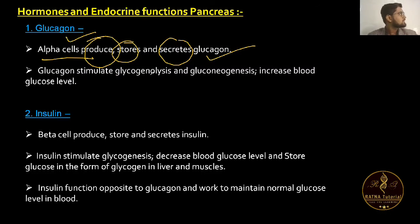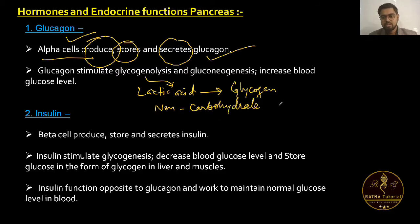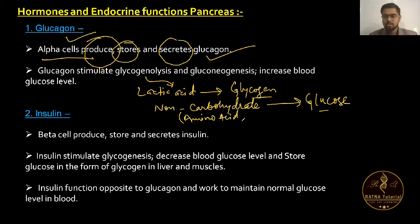Glucagon stimulates glycogenolysis. Glycogenolysis involves breakdown of glycogen. It also stimulates gluconeogenesis, where glucose is made from non-carbohydrate sources. Non-carbohydrate sources include amino acids and fatty acids. This process is called gluconeogenesis.